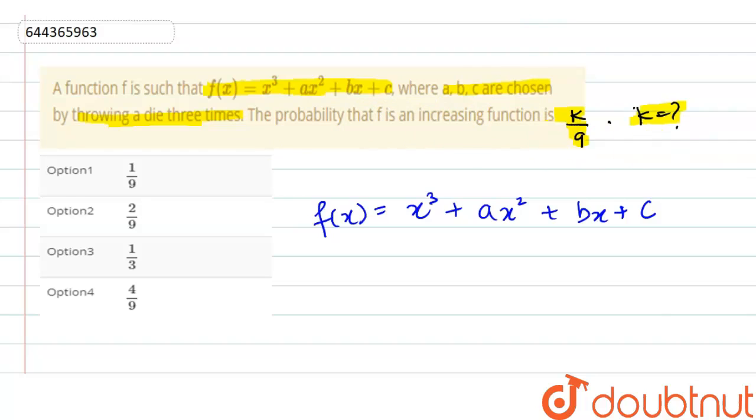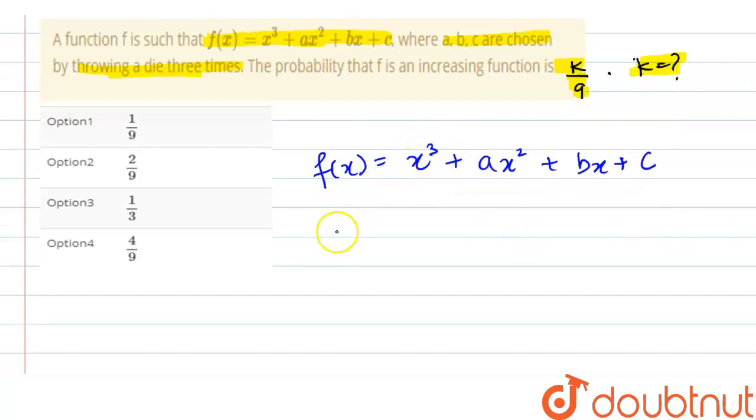The function will be increasing when we differentiate: f'(x) = 3x² + 2ax + b. When this derivative is greater than or equal to 0, then it will be an increasing function.